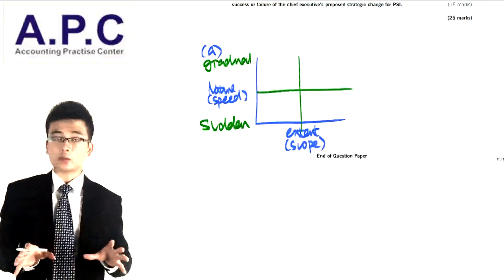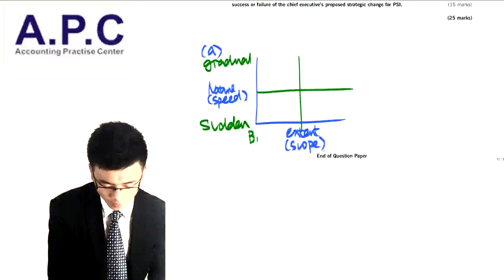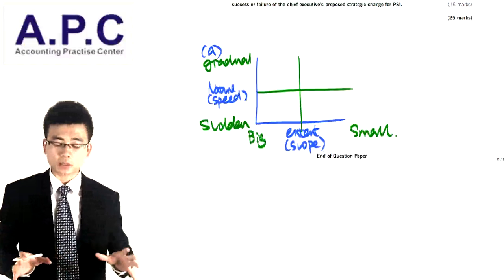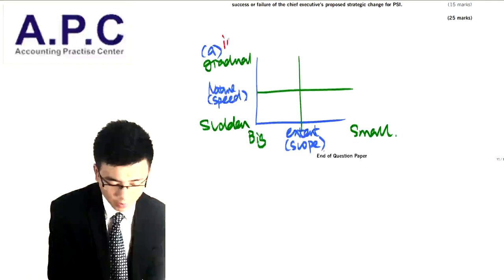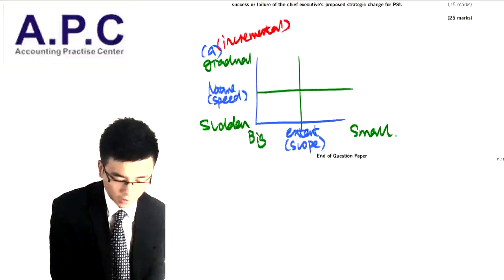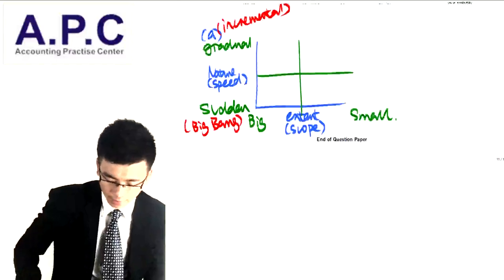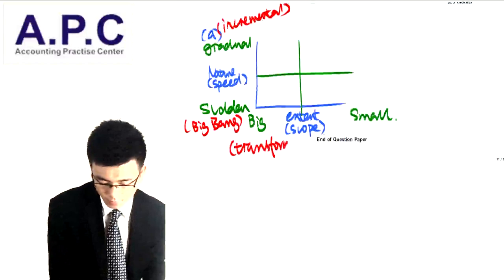The scope of the change, or extent of the change, can be big or small. In summary from the textbook: gradual means incremental, sudden means big bang, big means transformation, and small means alignment.